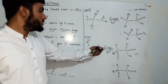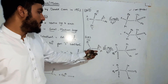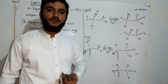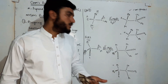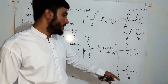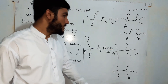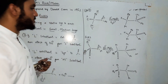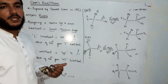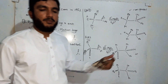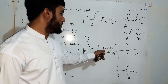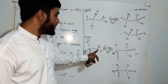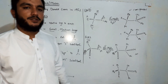The product that follows Cram's rules is the major product, also called the Cram product. Cram's rules tell us about the addition of the nucleophile and the stereochemistry of the product. Using these rules, we can identify the major and minor products during nucleophilic addition to a carbonyl carbon which has an alpha chiral center.